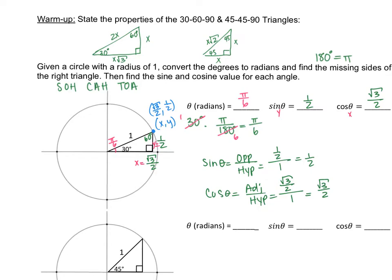So we built a triangle inside of a circle. We had the angle set as 30 degrees, we found the radians, and we found sine and cosine. Now we're going to do it for angles 45 and 60 degrees.